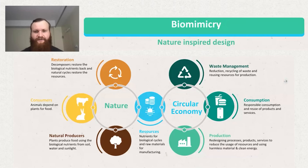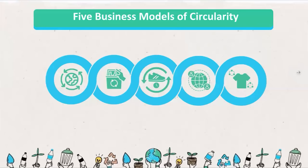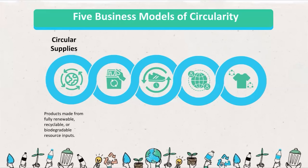We're going to go over some common business models for circular economies. The first is circular supplies — glass, plastic, paper, metals. These are products intentionally made from materials that can be easily recycled once finished. A plastic water bottle, a glass jar, a metal can that doesn't have plastic in it — these are made from easily recyclable materials and the end product is also made to be easily recyclable. One can make a product from recycled materials but also make it not recyclable — this would still fit under circular supplies, just wouldn't be as circular.